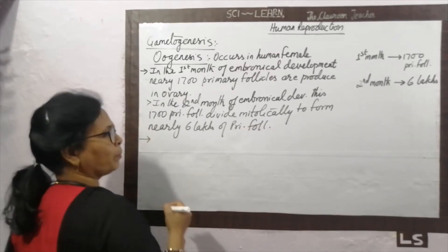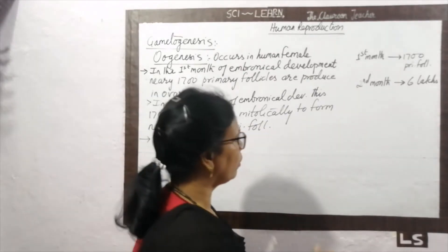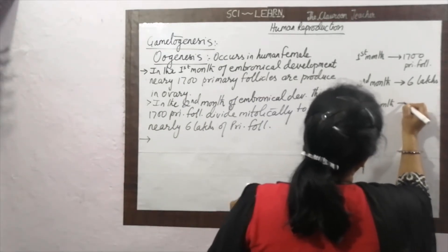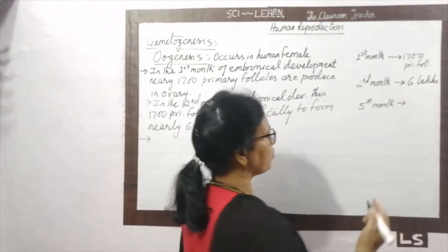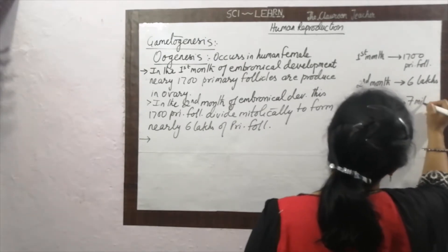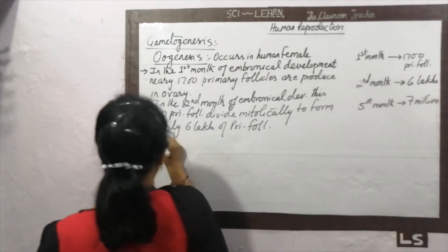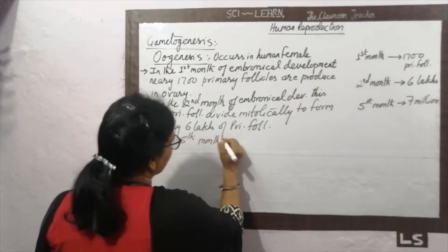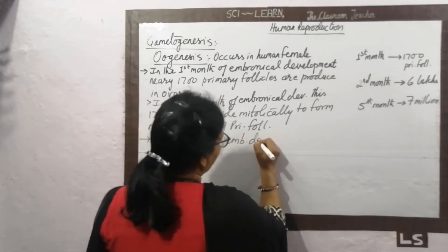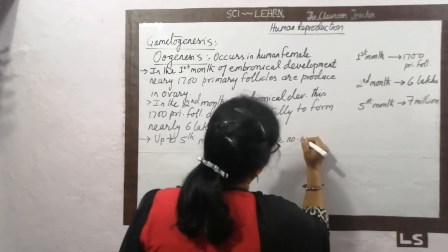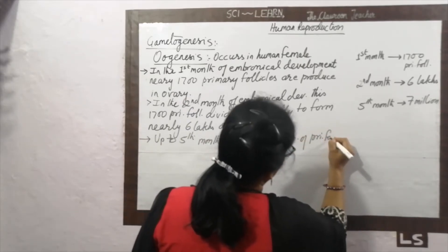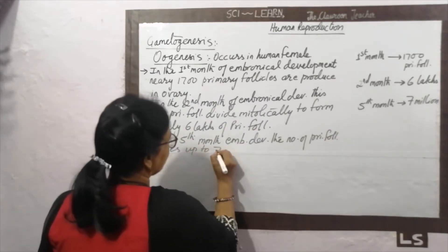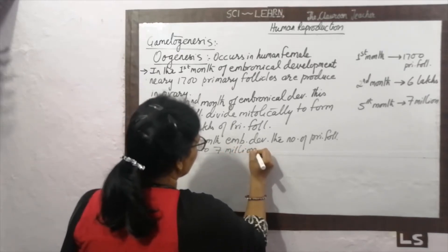Up to the fifth month of the gestation period or embryonical development, the number of primary follicles rises up to 7 million.